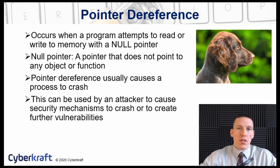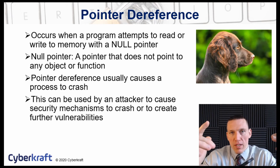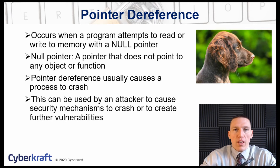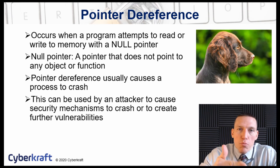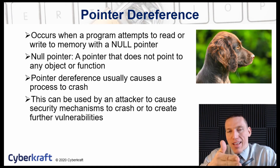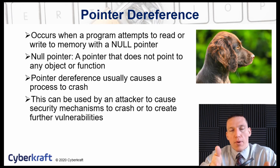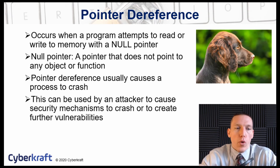Pointer dereference happens when a pointer becomes null. A pointer allows a program to access a specific memory sector — it references the program to that memory sector. When a pointer does not point to any object or function, it's known as a null pointer.